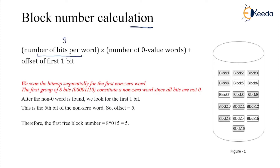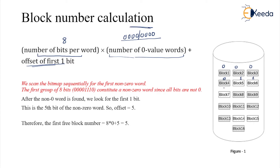For example, we are scanning the bitmap sequentially for the first non-zero word. The group of eight bits — the first eight bits: what is the first block occupied? That will become 0 0 0 0 0 1 1 1. So the first eight bits are 0 0 0 0 0 1 1 1, and the last one is occupied, so it becomes 0. That gives us the first eight bits: 0 0 0 1 1 1 0.